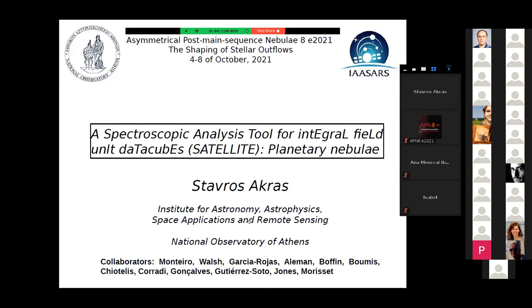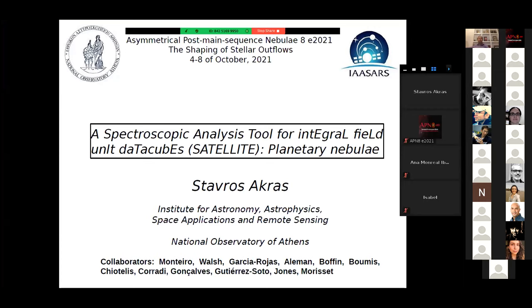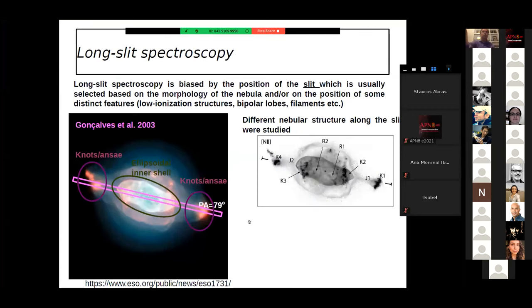Before I talk about this tool, I would like to say a few things about how the idea of that code came up. Long-slit spectroscopy is a traditional technique to study nebulae, but it is usually biased by the position of the slit, which we usually select based on the morphology of the nebula. This is a classical example, the planetary nebula NGC 7009.